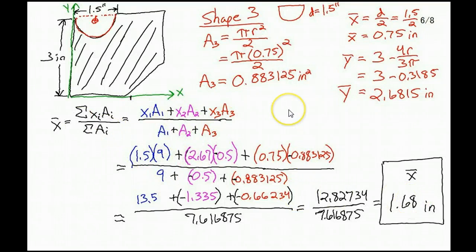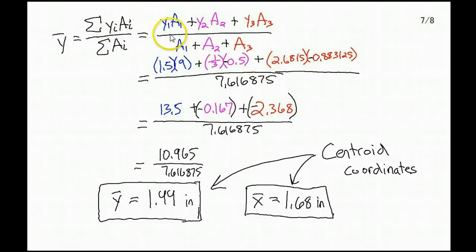We do the same thing for the y-coordinate. I expanded the equation again: y₁A₁ + y₂A₂ + y₃A₃. Plug in my numbers with the negative areas. I didn't bother to plug in the total area again because it was the same, so I pulled that from the previous slide. We get these numbers, and adding them up, we get 1.44 inches. So my centroid coordinates from the very bottom left of that shape are 1.44 inches up and 1.68 inches over, which is close to the center but not quite.